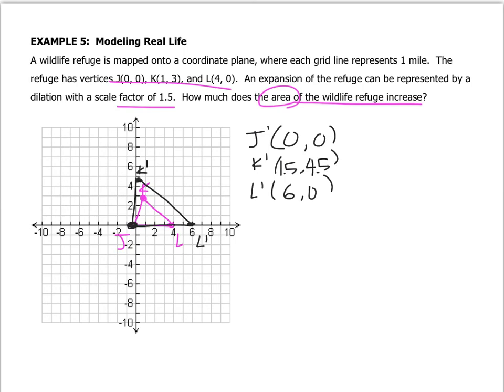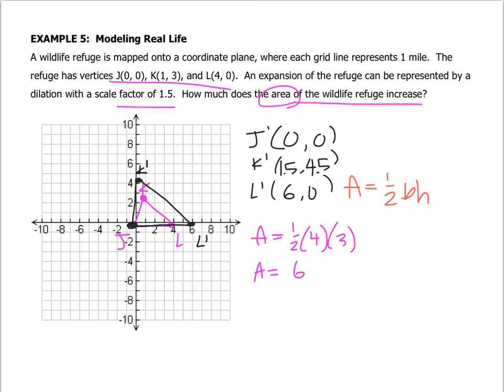Don't worry that you had to plot it in the middle of a box. That's fine. But now they want us to ask not just can you draw it, but also how does the area change? So remember the area of a triangle is 1/2 base times height or base height divided by 2. So the area of the original refuge was 1/2 of 4 and the height of it was 3. It was 3 boxes tall. So that would be an area of 6.